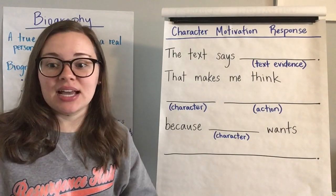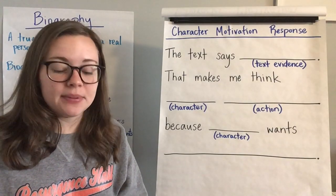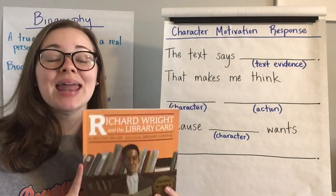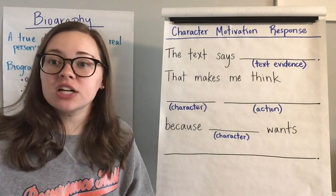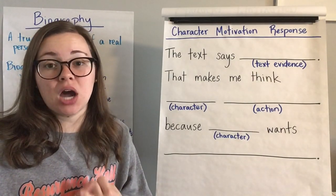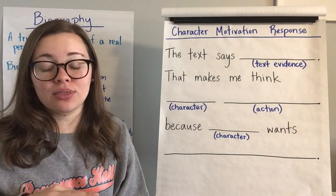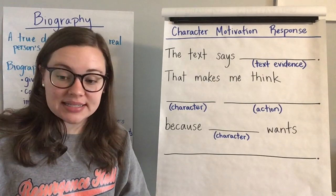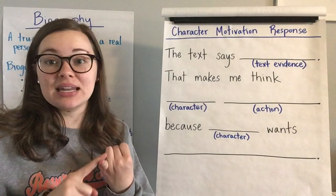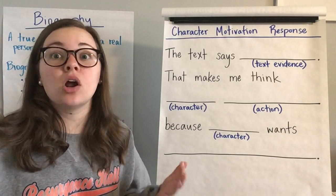The second thing we need to discuss is background information helpful for understanding the time period in which Richard Wright lived. Richard Wright grew up and was a young man in the 1920s and 1930s. Discrimination and segregation were very common against black people in the United States at this time, especially in the South. In the 1940s, Richard Wright became an extremely successful author, writing books like Native Son and Black Boy, which are still widely read and respected today.